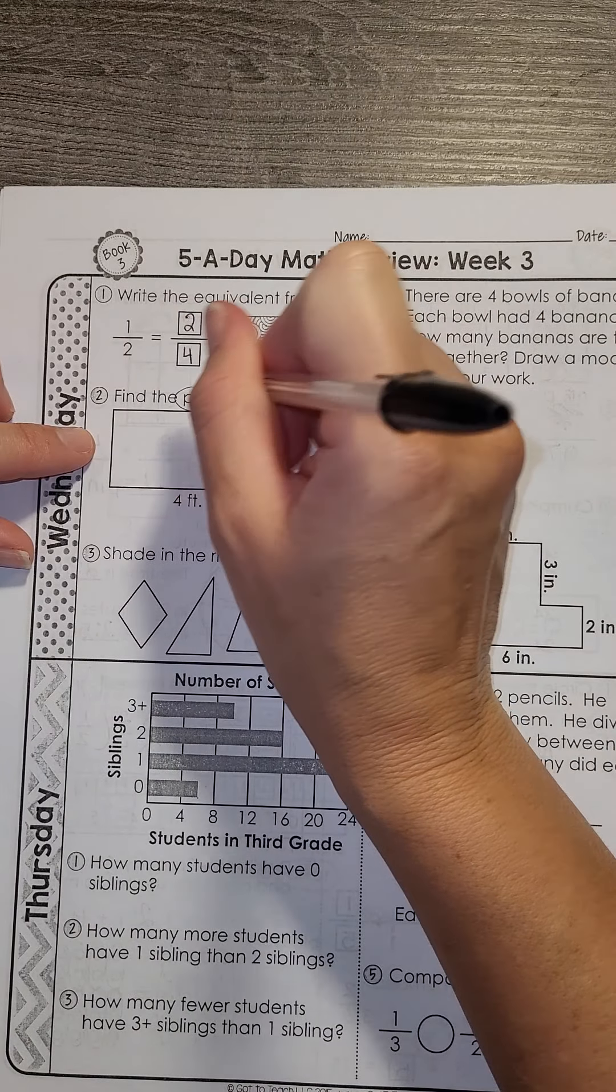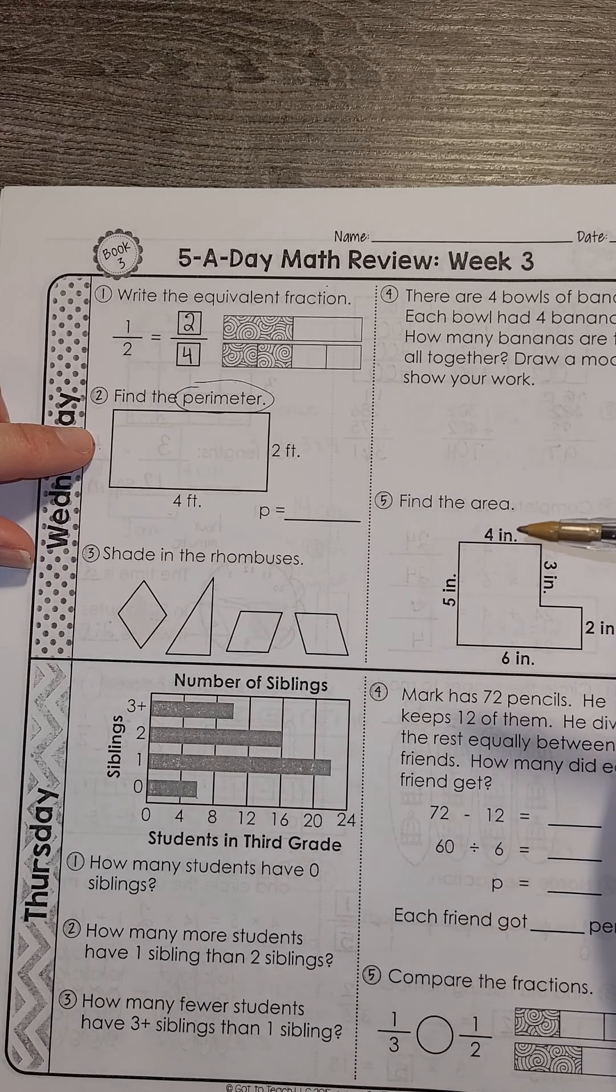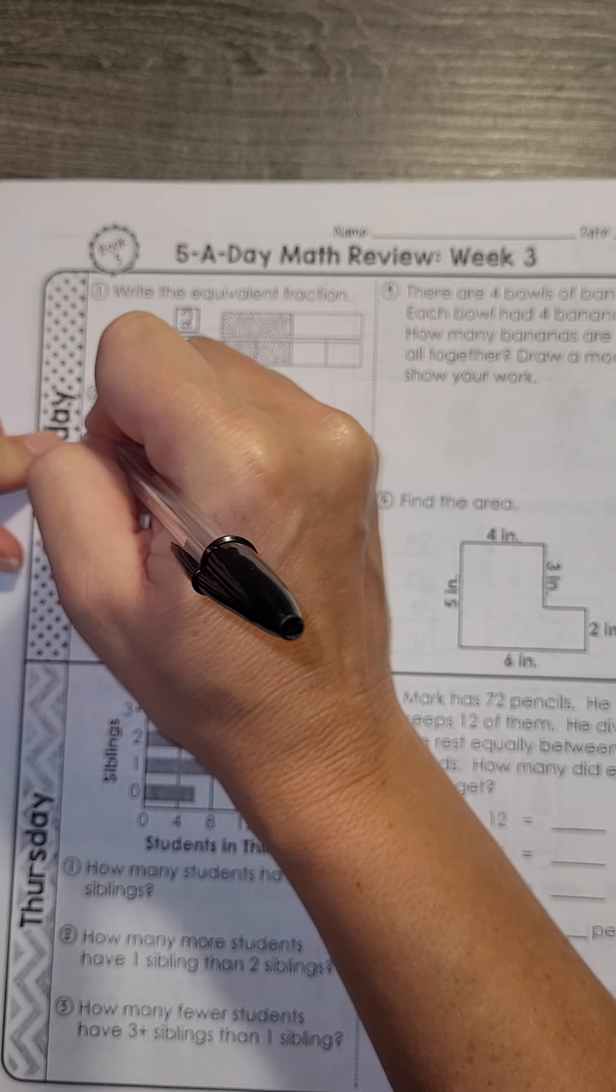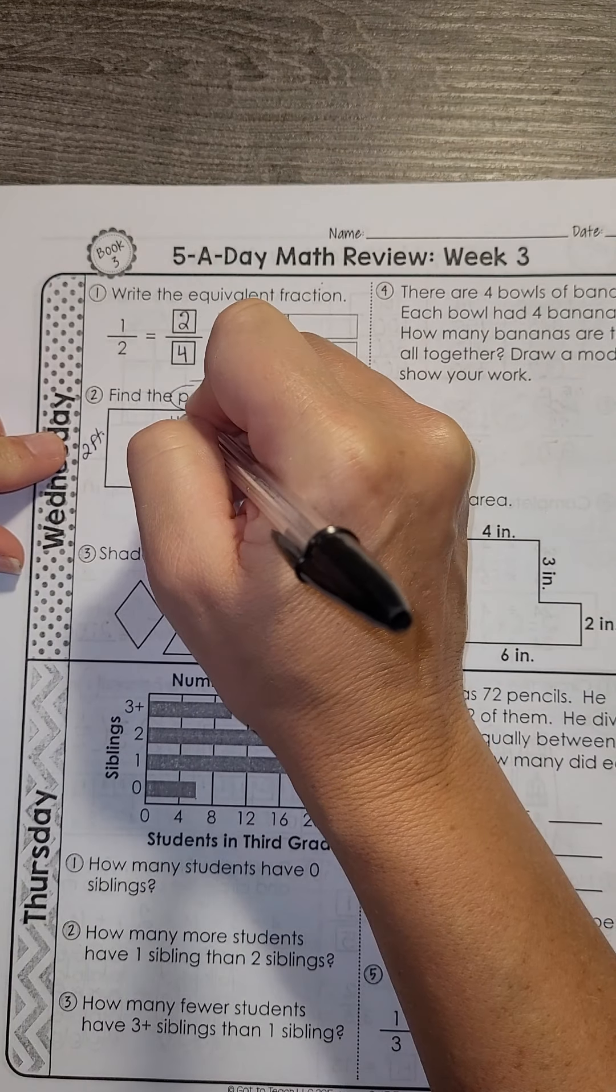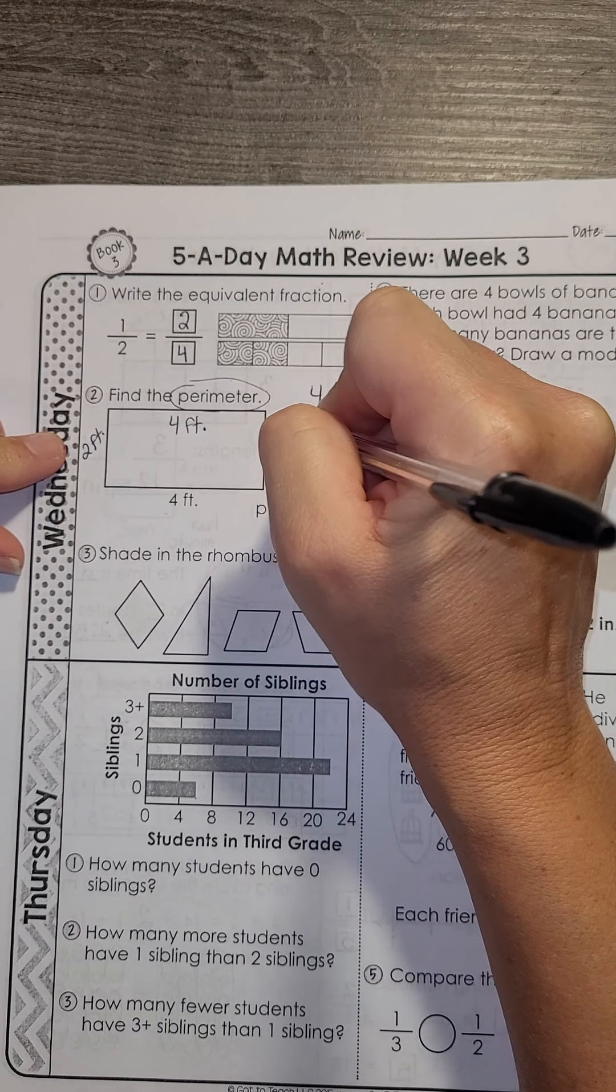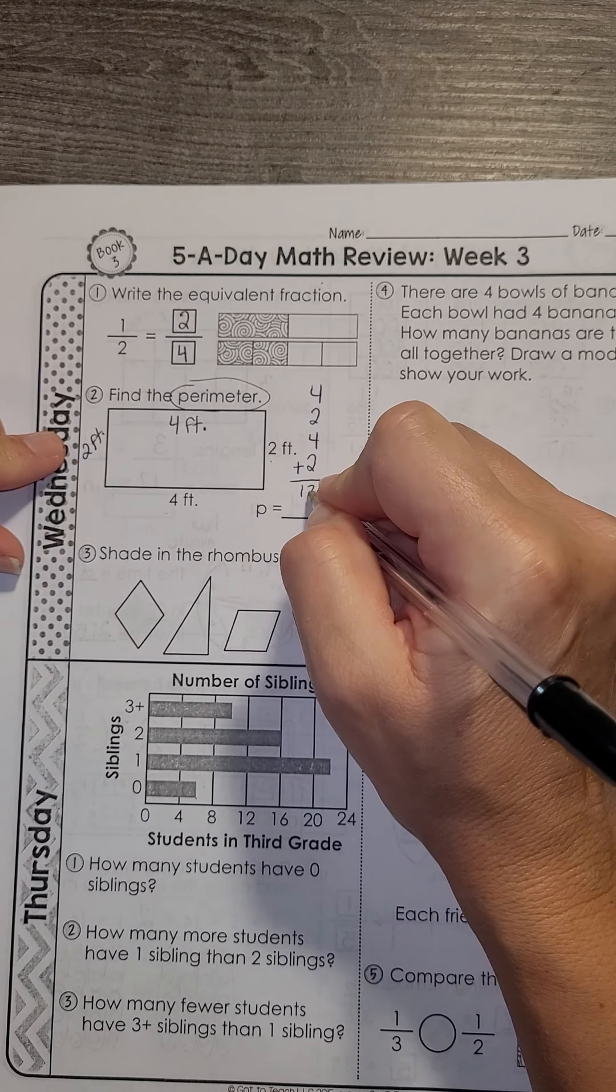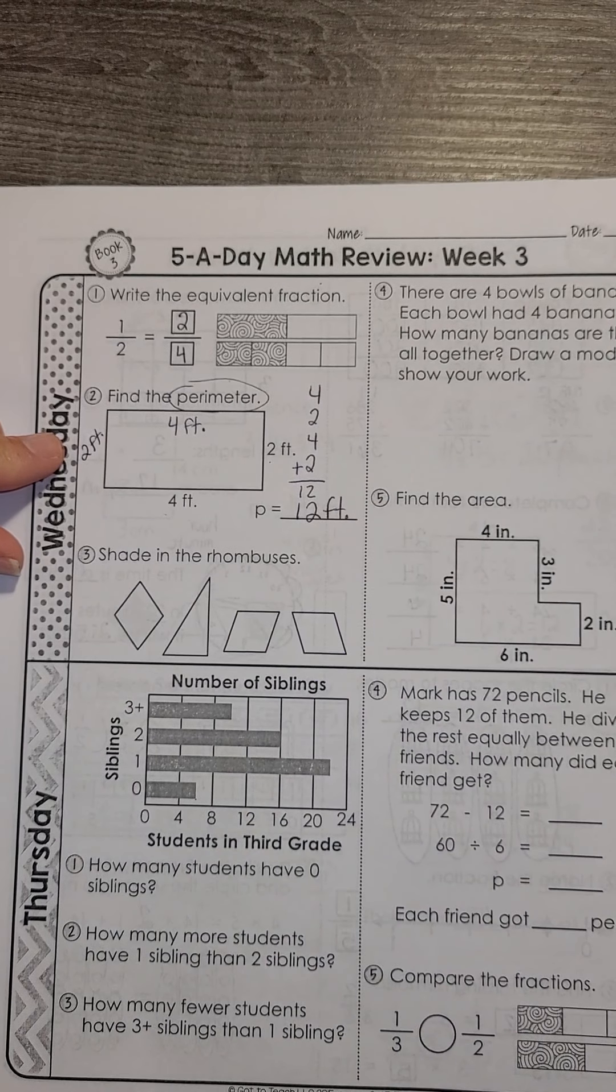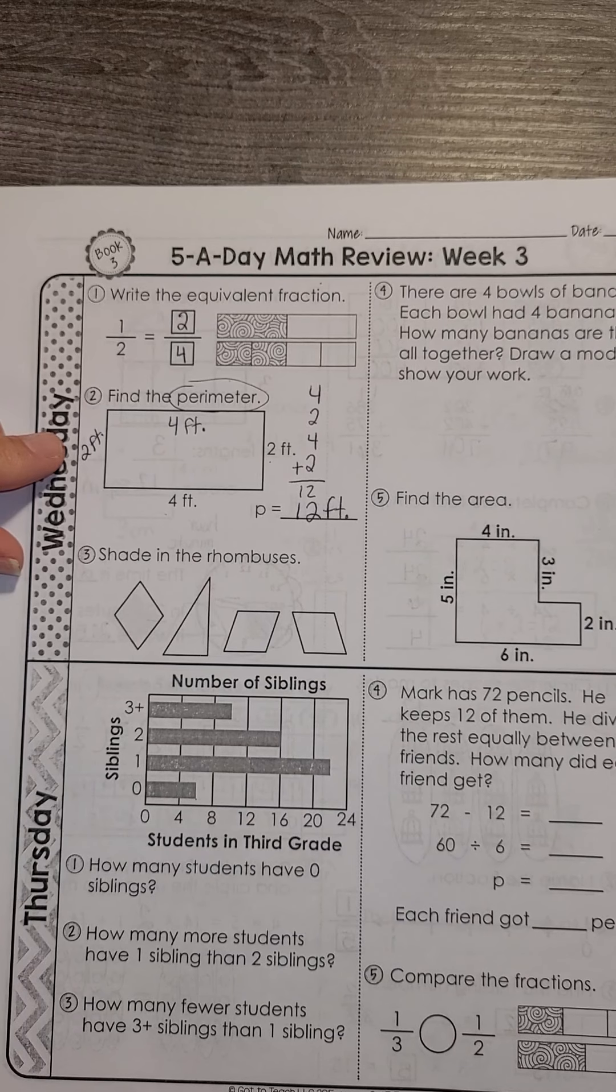Perimeter. Remember, we have to add up the sides. There are 4 sides. So we should be adding 4 numbers. In a rectangle, the sides are equivalent. So if one side is 2, the other side is 2. And the same for the top and the bottom. So now we're adding 4 plus 2 plus 4 plus 2. And that's going to give us 12. So the perimeter is 12 feet. Remember, our perimeter is the fence around the object.